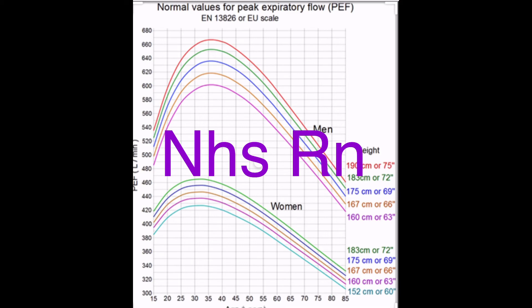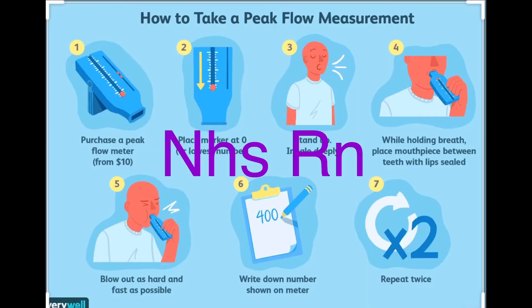Once the patient understands, ask them to do it three times. Each time, the examiner will move the gauge and give it back to you. Read the result, write it down, then reset to zero before returning it to the patient. Always make sure the gauge is back to zero before asking the patient to blow again.